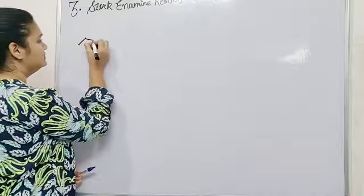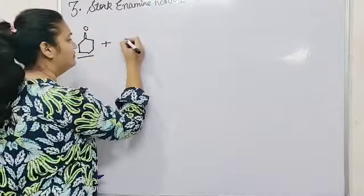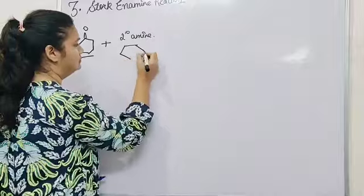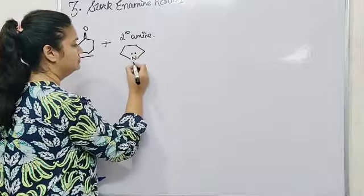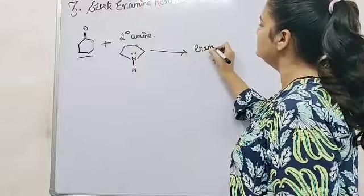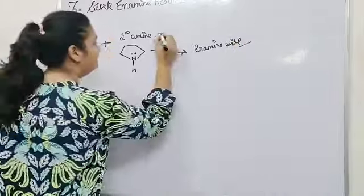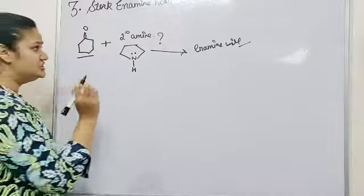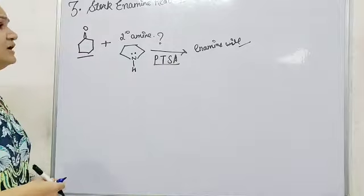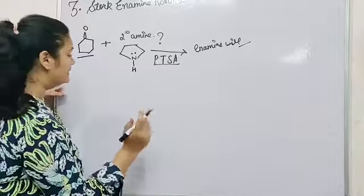Here the reaction is: this cyclohexanone will react with the secondary amine, and the formation of the enamine will take place. What we require is acidic conditions. We usually take PTSA, that is para-toluenesulfonic acid. What the PTSA will do? It will donate its hydrogen — that is, the hydronium ion. Now under acidic conditions,